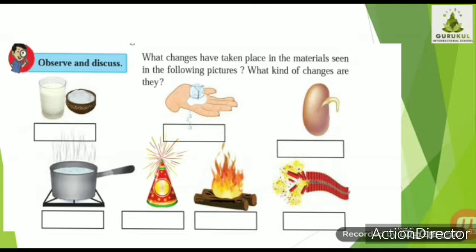The next picture shows burning of wood — wood is on fire resulting in ashes. This is a chemical change. The last picture again shows firecrackers, so similarly it is a man-made, fast, chemical, and irreversible change. These were just introductory pictures to help you understand the various types of changes.